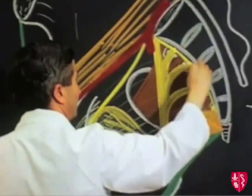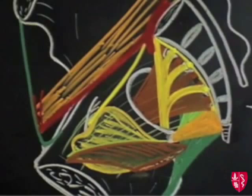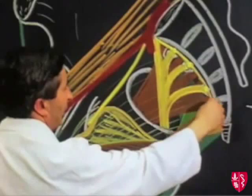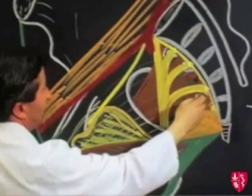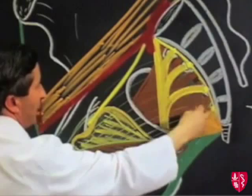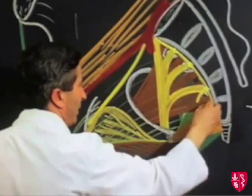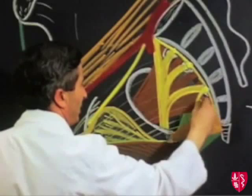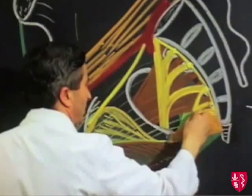Before we leave this region, we must put in the pudendal nerve. The pudendal nerve arises from the second, third, and fourth sacral nerves. This is the L4 and L5 lumbar sacral trunk; this is S1, 2, and 3. So we'll bring it off here, bringing another one out, and S5 from here. So we have the pudendal nerve.